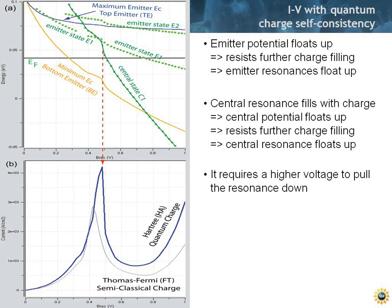The corresponding result in an IV curve is that from the thin line here — the former Thomas-Fermi semi-classical potential based IV — the current IV has its peak shifted to a higher voltage, because you have to pull harder in voltage to pull the resonance down.